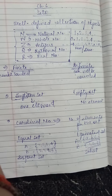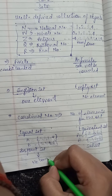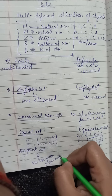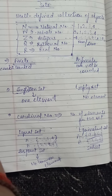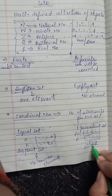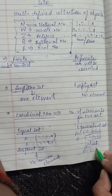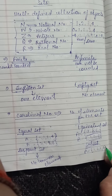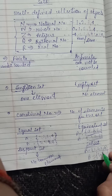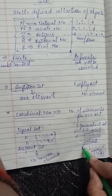Next we have disjoint sets. When there is no common element in the two sets, then they are called disjoint sets. Subset — when a set is made by taking some elements from another set. For example, if A = {1, 2, 3, 4} and set B is made by taking elements 1 and 2 from set A, then B is the subset of A.